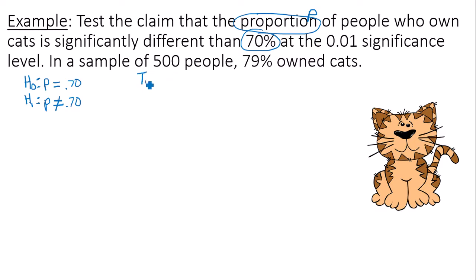So important to note here is that I do have a two-tailed test, and my claim is the alternative hypothesis. That is my claim in this case, that the proportion of people who own cats is significantly different.